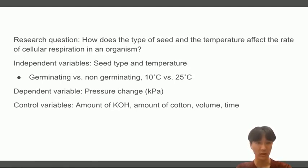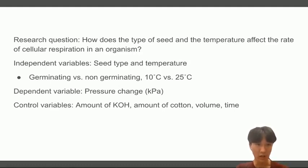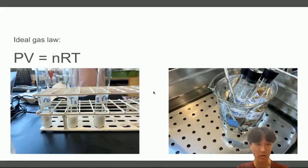Some control variables included the amount of KOH used, amount of cotton used, volume of the seeds and beads, and the time. The reason why we kept the cotton and volume constant is because it would directly impact the pressure, which is what we're measuring.